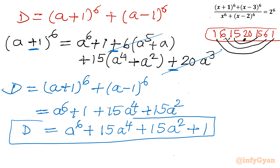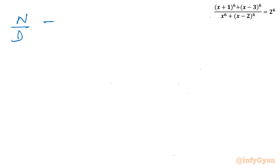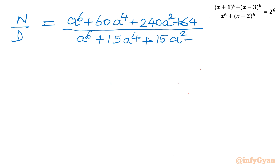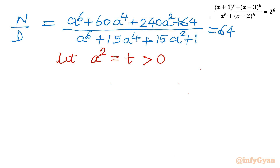Now I plug both values into the equation. The numerator is a^6 + 60a^4 + 240a^2 + 64, and the denominator is a^6 + 15a^4 + 15a^2 + 1, equal to 64. Now I use the substitution a^2 = t. Since we are calculating real solutions, t must be positive — negative t would give complex values of a, which we reject.